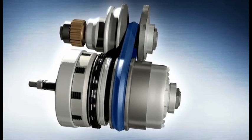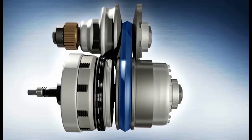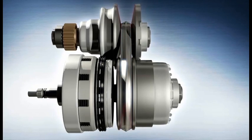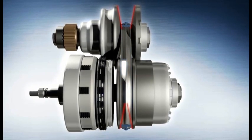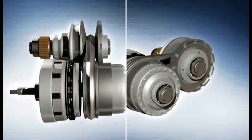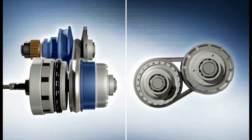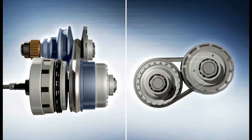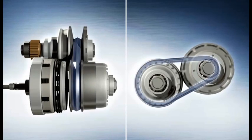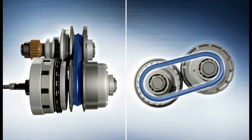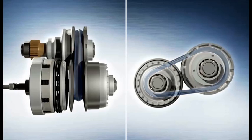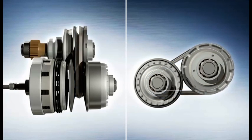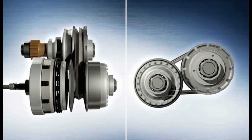A metal push belt runs along the groove between the two pairs of sheaves. One sheave in each pair is movable along the shaft, which allows the running radius of the push belt and thus the transmission ratio to adjust automatically in continuously variable operation, with no loss of traction.